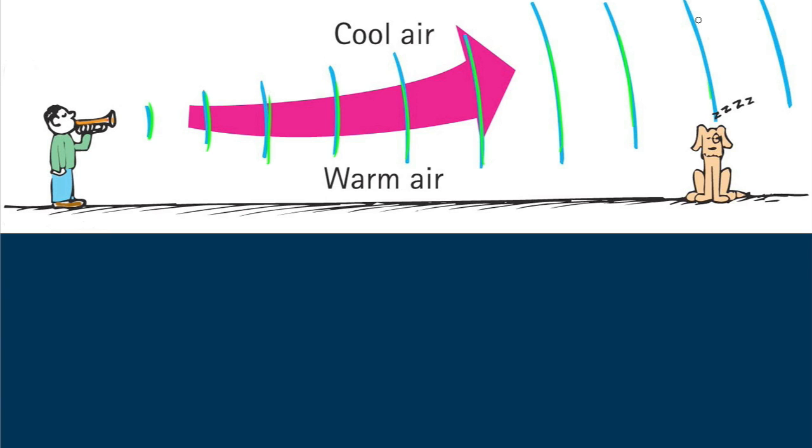The refraction of sound occurs when different parts of the wavefronts travel at different speeds. By wavefront is meant the front part of a wave, indicated by the blue lines, or green, as I've indicated. The direction of sound is always at right angles to the wavefronts.